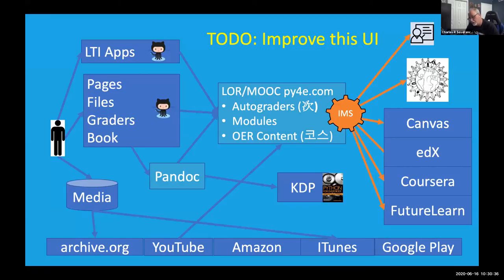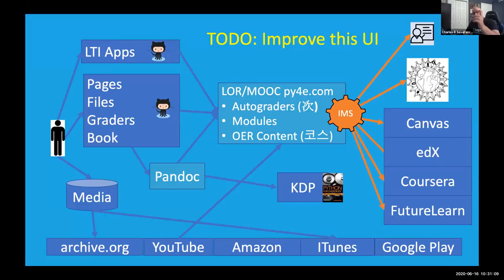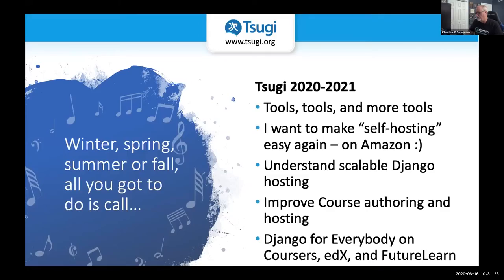Another thing I want to share — this is a complex slide, I apologize — this is how I build MOOCs and my learning object repository. I use GitHub, auto graders, open education resource OER material, Sugi, Coursera, Pandoc. It's a glorious, architecturally beautiful way to manage open education resource materials and create online courses, then plug those materials into all the systems on the planet. But the user interface for this is terrible, and I'm getting increasing interest from folks, even talking to real publishers like O'Reilly that might want to borrow some of these ideas.